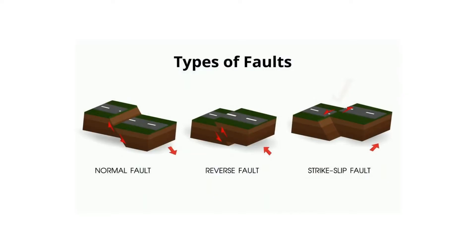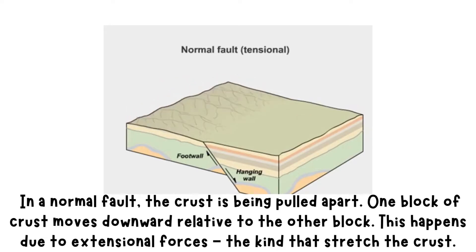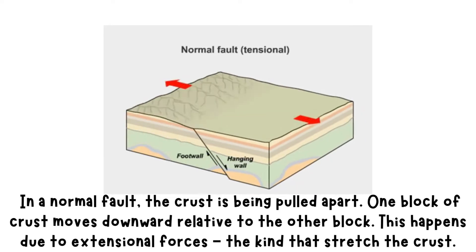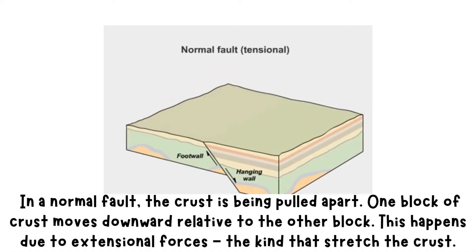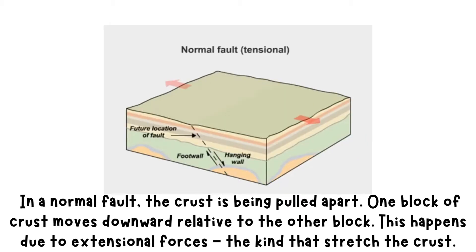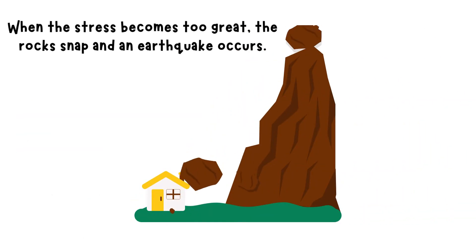First, we have normal faults. In a normal fault, the crust is being pulled apart. One block of crust moves downward relative to the other block. This happens due to extensional forces — the kind that stretch the crust. When the stress becomes too great, the rocks snap and an earthquake occurs.